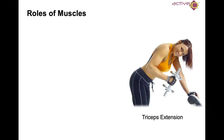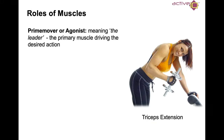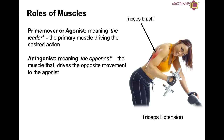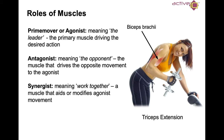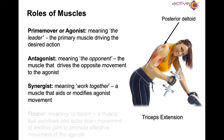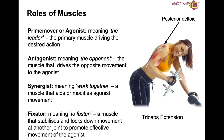Looking at the roles of muscles using a basic tricep extension: the prime mover or agonist — meaning the leader — is the primary muscle driving the desired action, in this case the triceps brachii. The antagonist — meaning the opponent — is the muscle that drives the opposite movement to the agonist, in this case the biceps brachii. The synergist — meaning work together — is a muscle that aids or modifies agonist movement; here, the posterior deltoid. The fixator — meaning to fasten — stabilizes and locks down movement at another joint to promote effective agonist movement; in this case, the upper trapezius.